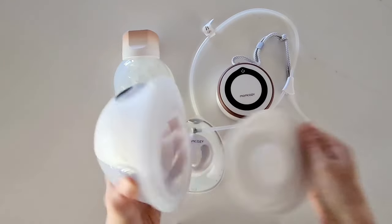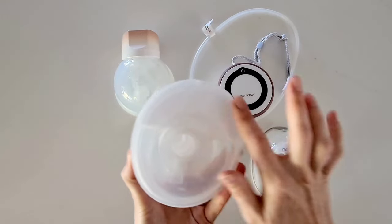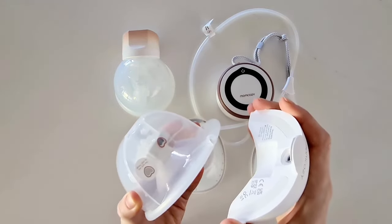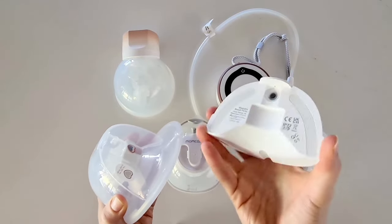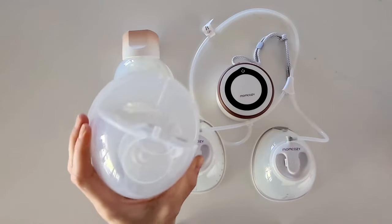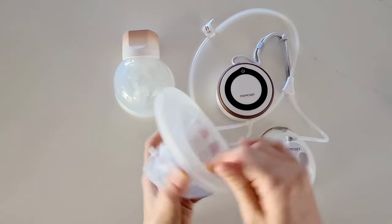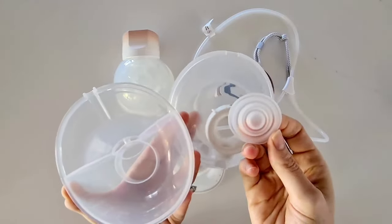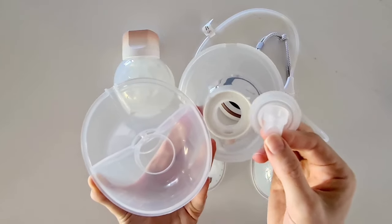I'll start with the popular Momcozy M5. What we are needing to do is find any of the parts that have come into contact with the breast milk. We are going to want to remove the pump motor. You can simply wipe that down, but this does not need to be washed or sterilized. That will leave us with the cup with your flange, your diaphragm, as well as your duckbill valve.